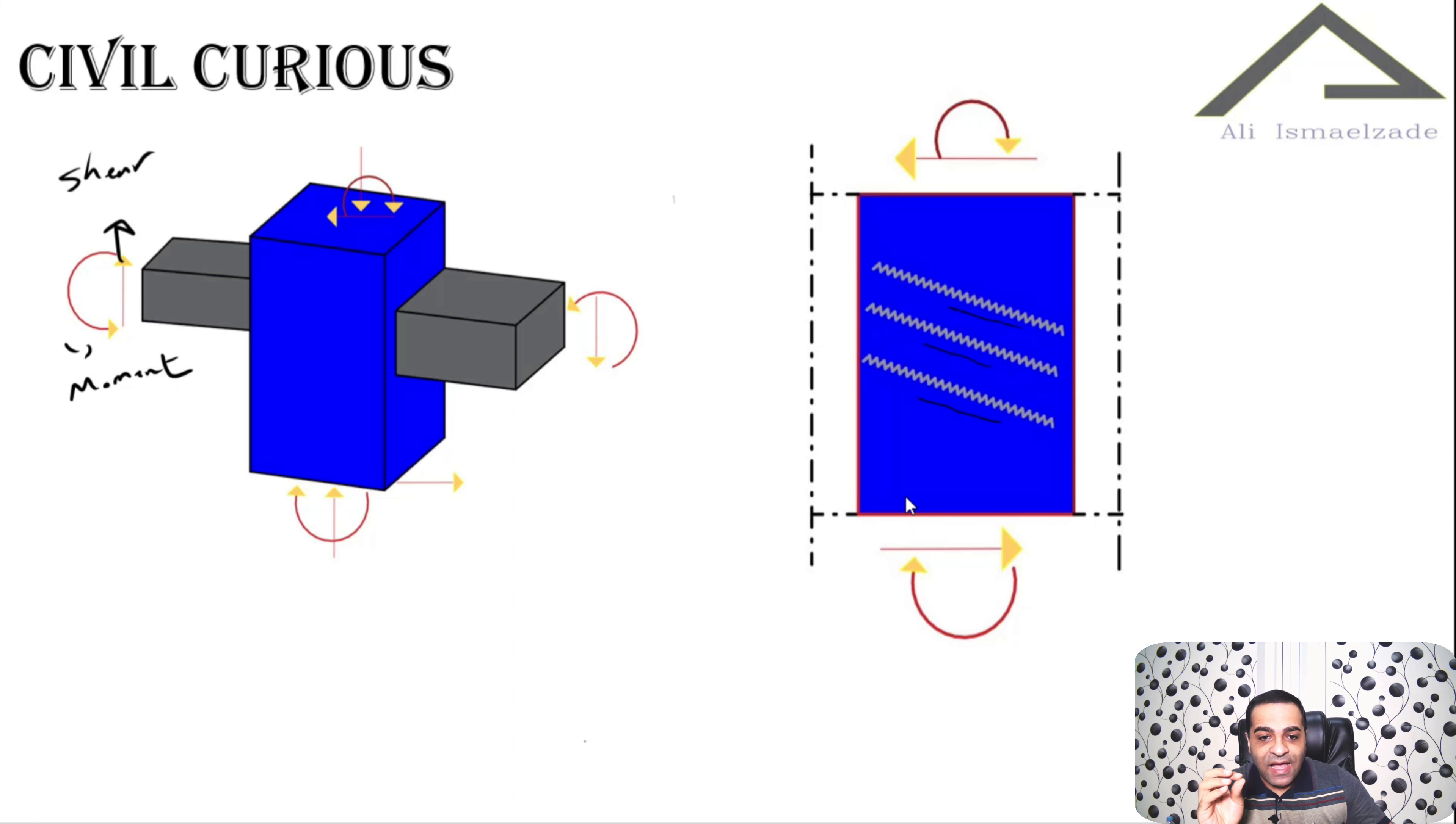We have to use proper reinforcement in the joint area. We call this reinforcement ties. These were the simple concepts of the joint.